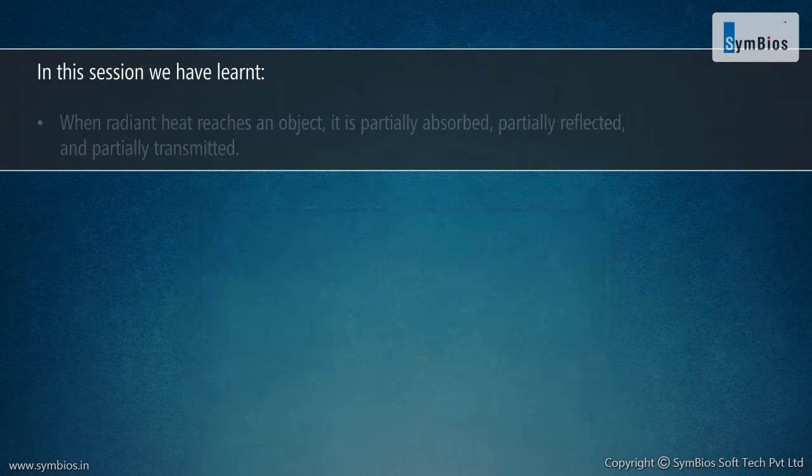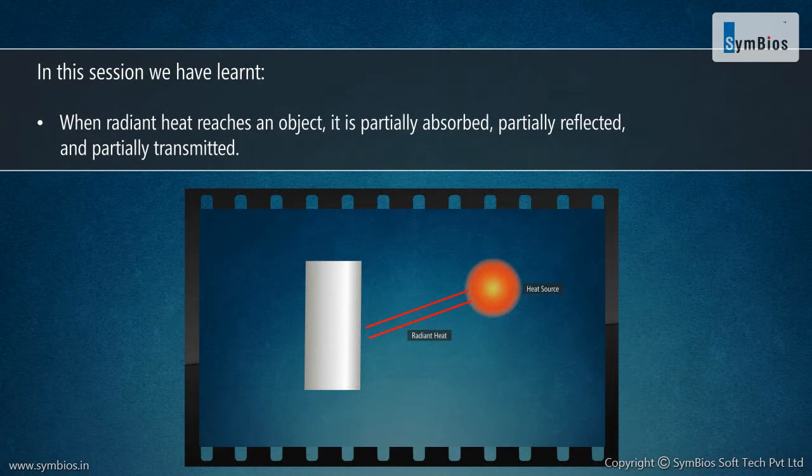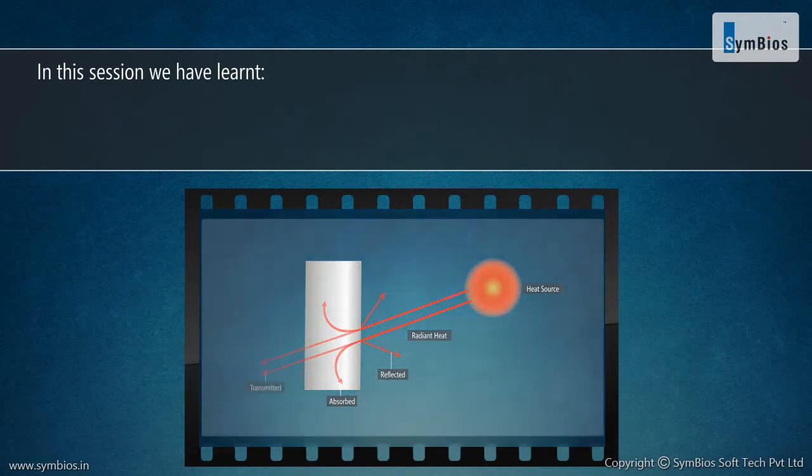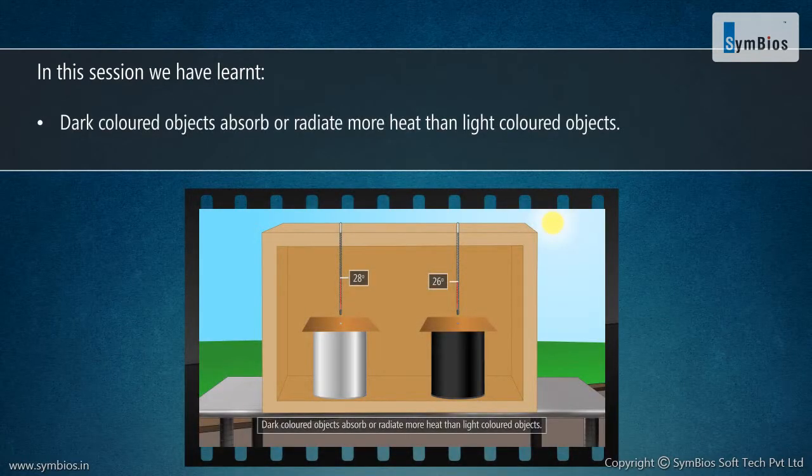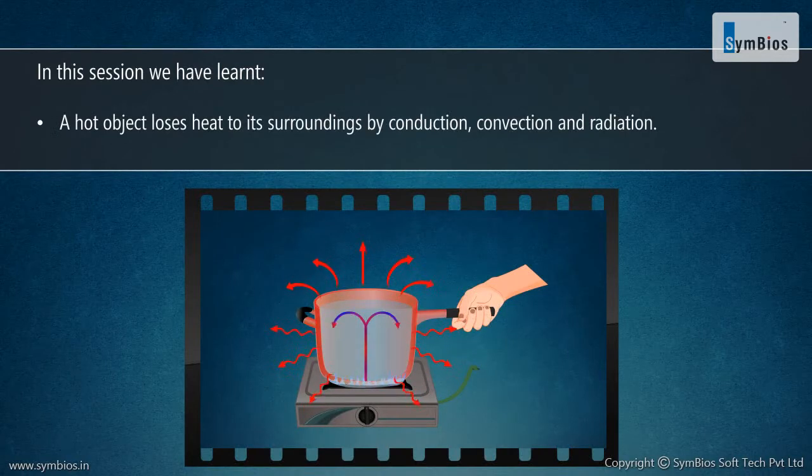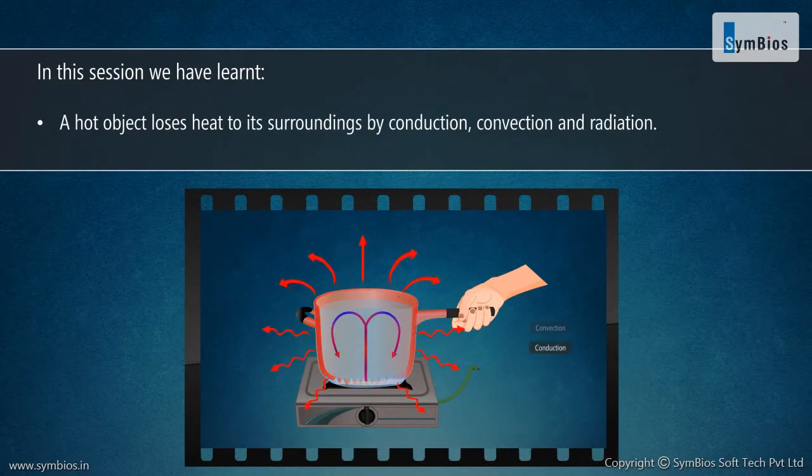When radiant heat reaches an object, it is partially absorbed, partially reflected, and partially transmitted. Dark colored objects absorb or radiate more heat than light colored objects. A hot object loses heat to its surroundings by conduction, convection, and radiation.